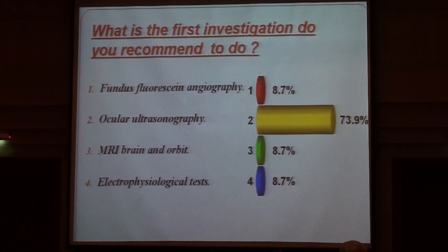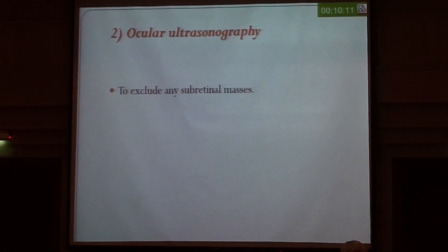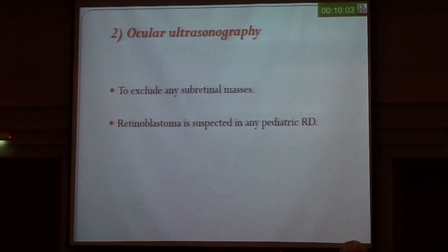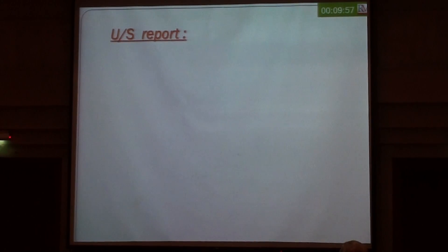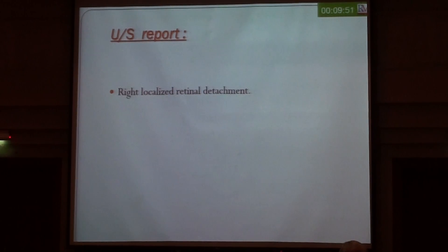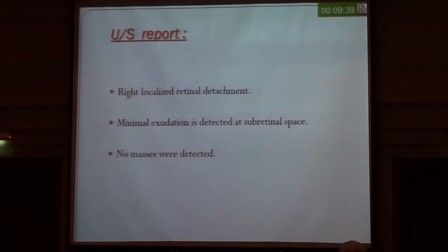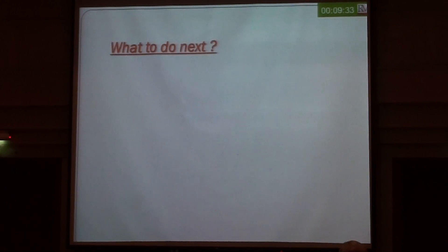We decided to do ocular ultrasound to exclude any sub-retinal mass. In the case of pediatric retinal detachment, first we have to exclude retinoblastoma. I don't have an ultrasound image — I tried to get it but couldn't — so I summarized the report: right eye showed tractional retinal detachment with minimal exudation detected at the sub-retinal space, and no masses were detected. So we can exclude retinoblastoma; no mass detected at the sub-retinal space or any tumor.